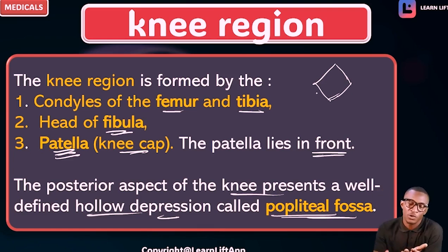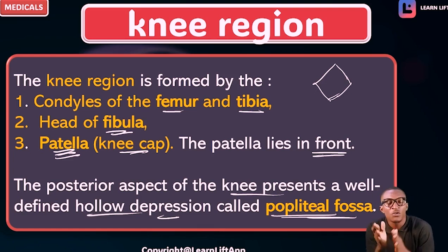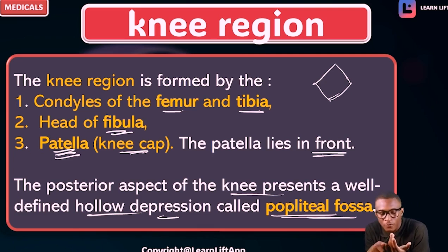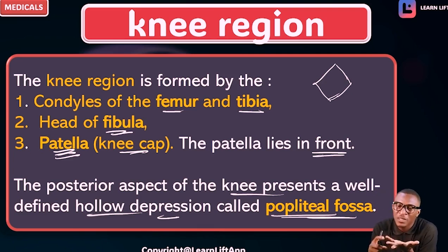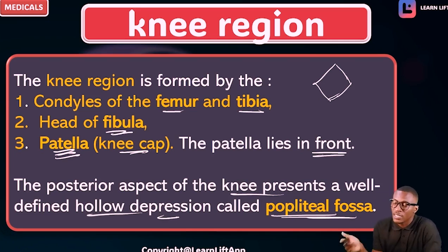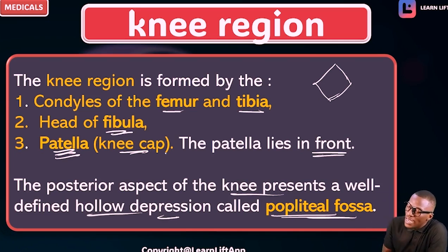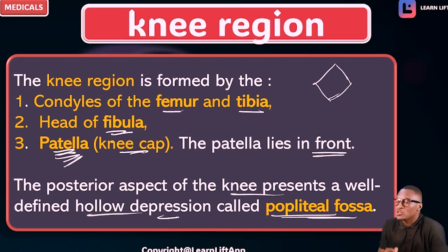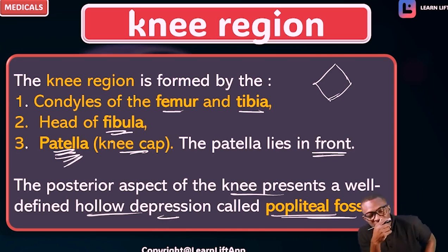Everybody — what forms the knee joint? The knee joint is formed by the condyles of the femur and the tibia, the head of the fibula, as well as the patella, which is the kneecap. The biggest sesamoid bone of the lower limb is called the patella.